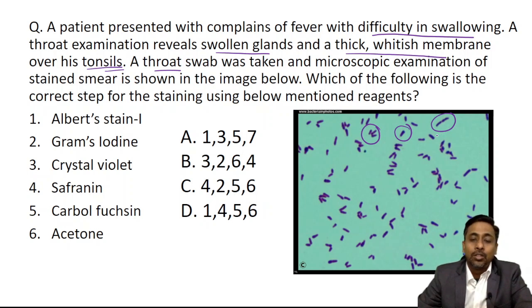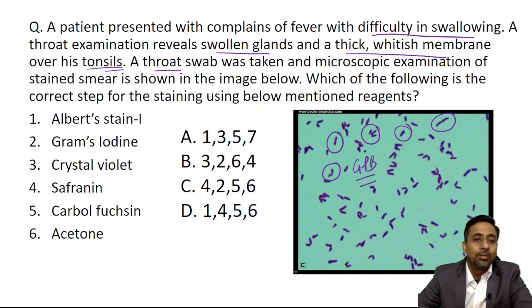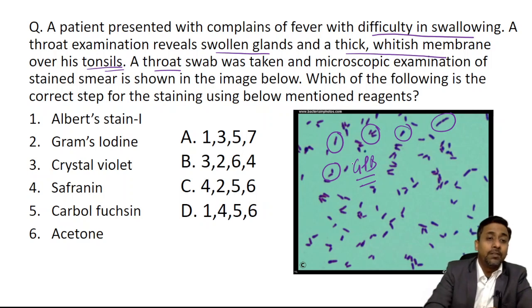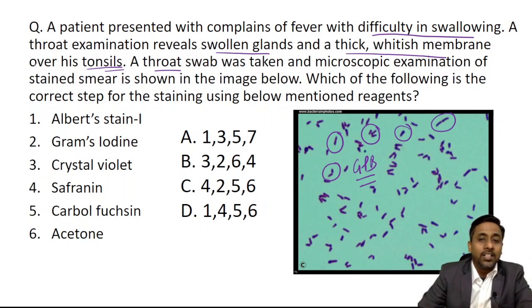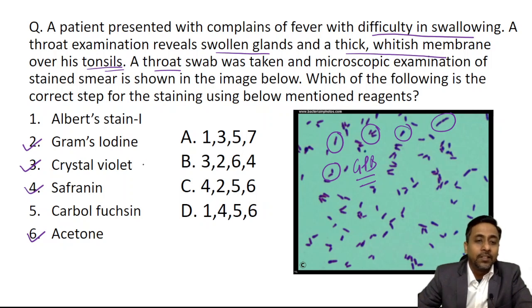Corynebacterium diphtheriae is a gram-positive bacilli, and this image also shows a bluish-purple color — so it is a gram-positive bacilli, and obviously this is a gram stain. The reagents mentioned are Gram's iodine, crystal violet, safranin, and acetone. The correct sequence is: first crystal violet, second Gram's iodine, third acetone, and fourth safranin — so the correct answer is three, two, six, four.